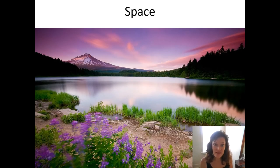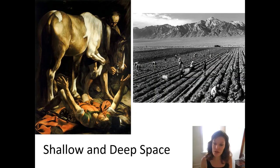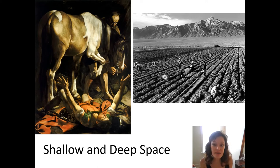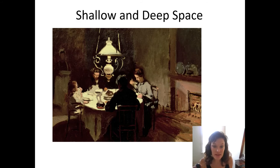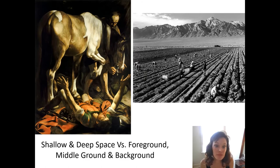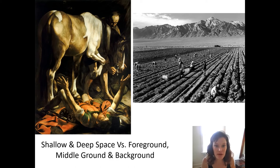Let's talk about space. Two terms to remember are shallow and deep space — these are relative terms meant to compare two different images to each other. We could say that the Caravaggio on the left has relatively shallow space compared to the Ansel Adams photograph on the right. We could say a third painting is relatively deeper than the Caravaggio but relatively shallower than the Ansel Adams.